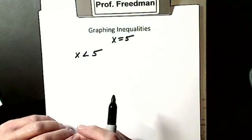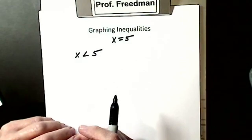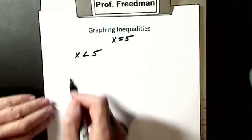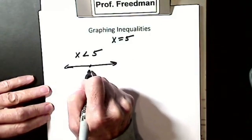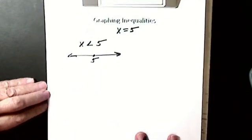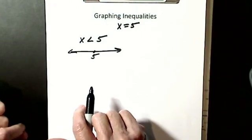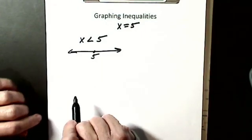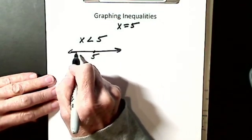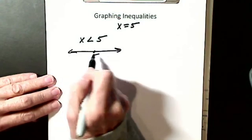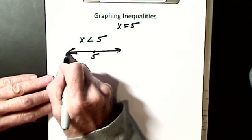I have to show someone that all the numbers less than 5 are a lot of numbers. So I draw my number line and label the point 5. All the numbers less than 5 — 4, 3, 2, 1, 0, negative 1, negative 2 — go this way, so I make this thicker.